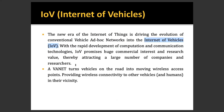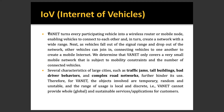IoV is attracting a large number of companies and researchers. It turns vehicles into moving wireless access points, providing wireless connectivity to other vehicles and humans in their vehicular network. V-Net is used for local networking — to communicate from one vehicle to another vehicle. For global connectivity, we need IoV. V-Net turns every participating vehicle into a wireless router or mobile node, enabling vehicles to connect to each other and create a network with a wide range.